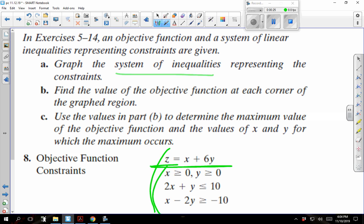This is going to be your objective function. Letter B says find the value of the objective function at each corner of the graphed region. Use those values from part B to determine the maximum value. So we want the maximum of the objective function and the values of X and Y for which the maximum occurs.